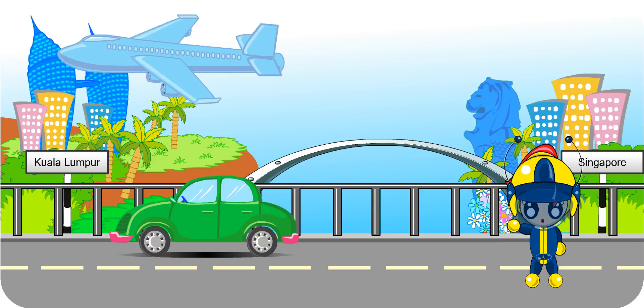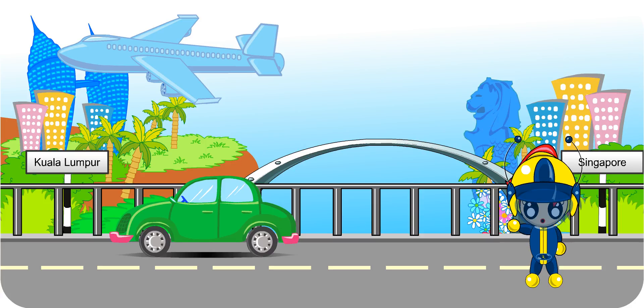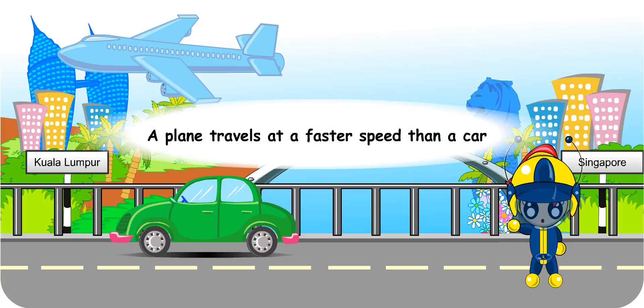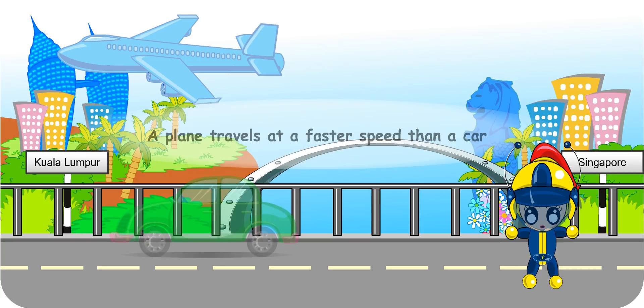Well, I would definitely take a plane. It is so much faster. So, what does that tell you about the speed of the two modes of transport? A plane travels at a faster speed than a car. Hence, we can reach Kuala Lumpur earlier if we travel by plane.